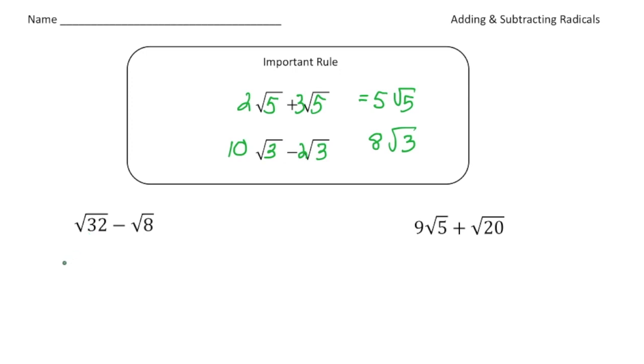I know that the square root of 32 is 16 times 2. And 16 is a perfect square, so I can rewrite this as 4 radical 2. Now I'm going to focus on the square root of 8. The square root of 8 is the square root of 4 times 2. And 4 is a perfect square, which is 2. So that can be written as 2 radical 2. Now notice that I can subtract these because what's inside the radical sign is the same. So 4 radical 2 minus 2 radical 2 is 2 radical 2, and there's your answer.